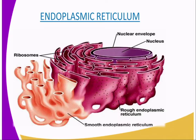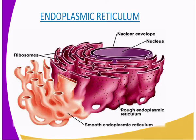The others are not associated with the ribosomes and that is referred to as smooth endoplasmic reticulum. The rough endoplasmic reticulum transports proteins, while the smooth endoplasmic reticulum synthesizes and transports lipids. That is the difference between the two types of endoplasmic reticulum.